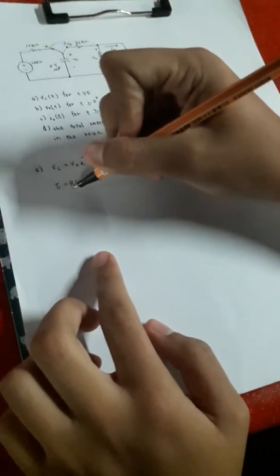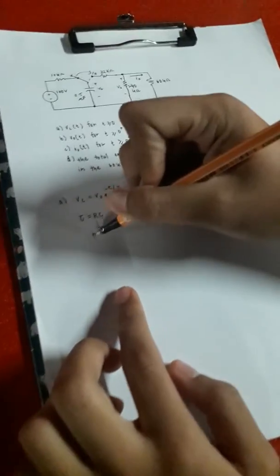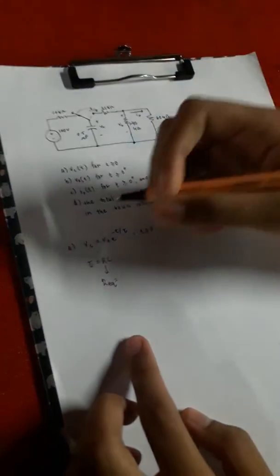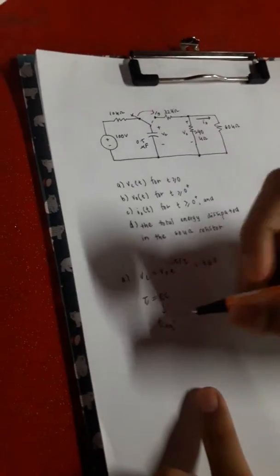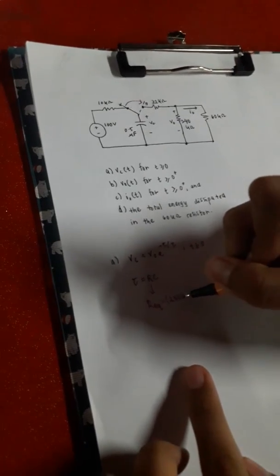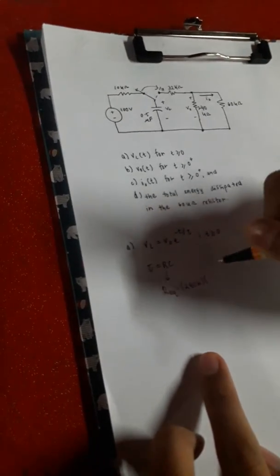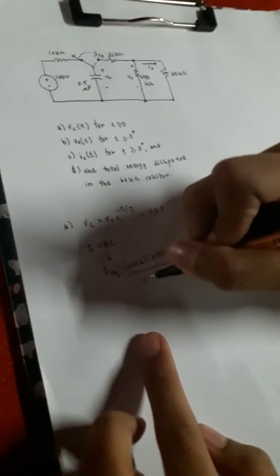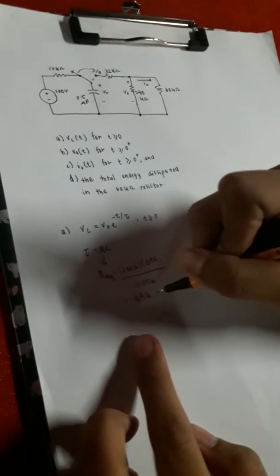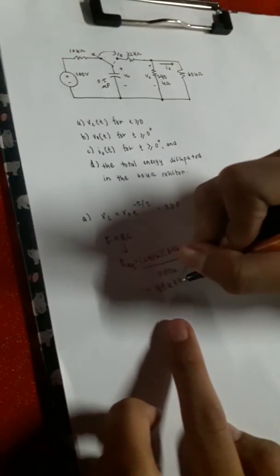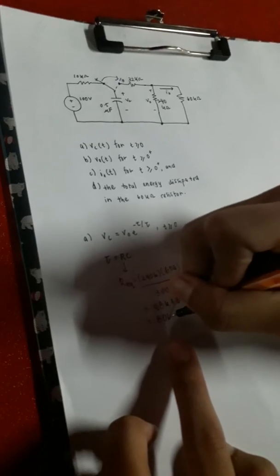R is the equivalent resistor. So, to find the equivalent resistor, we must find the equivalent resistor here. So 240K parallel to 60K. So, we get 48K ohm. Then, we plus with 32K ohm. Then we get 80K ohm. This is for the equivalent resistor.